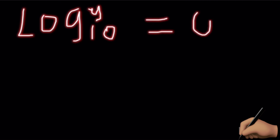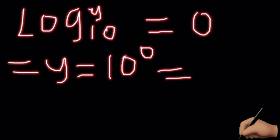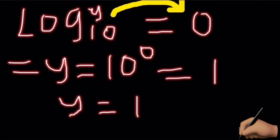Next: log base 10 of y is equal to zero. We express it as an exponential relation: y is equal to 10 raised to the power zero, which is equal to 1. From the law of indices, we know that any number raised to the power zero is equal to 1, provided that number is not zero. So our y is now equal to 1.